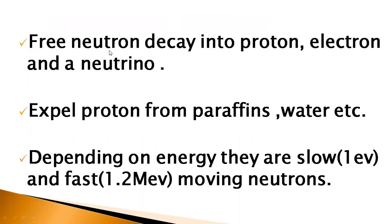Free neutron decays into proton, electron, and a neutrino. If we see the decay of one neutron, what it converts into, one proton, electron, and one neutrino is produced.